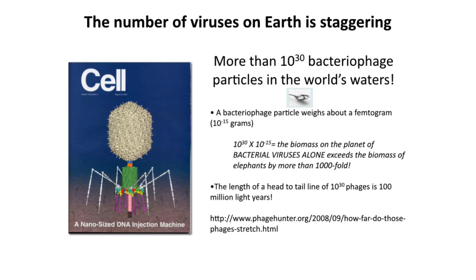The numbers of viruses on Earth is staggering. In the waters of the world, it's estimated there are 10 to the 30th or 10 to the 31st virus particles — just a huge, almost incomprehensible number. If you figure how much each virus weighs — here we're looking at bacteriophages, which infect bacteria — you can calculate that 10 to the 30th viruses exceeds the biomass of elephants on Earth by more than a thousandfold.